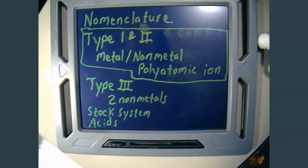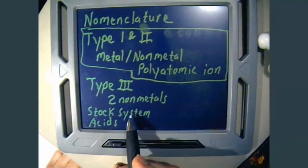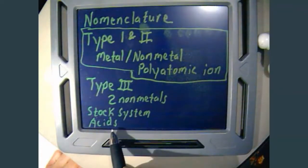Alright, so today we're going to talk about nomenclature, which is a fancy way of saying naming compounds. Your book does a really good job with this, and it breaks it down into type 1, type 2, and type 3 compounds, and then also the stock system, which is the older way of naming it, and acids.